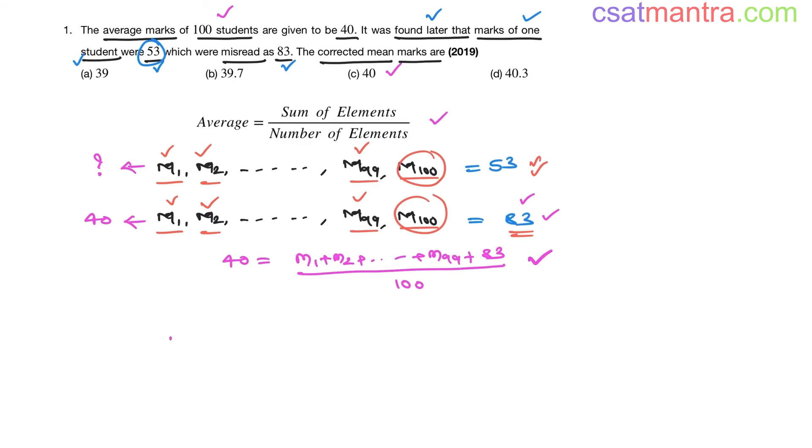Now, from this equation, we can write M1 plus M2 plus up to M99 plus 83 equals 100 times 40, which is 4000. Now, M1 plus M2 plus up to M99 equals 4000 minus 83. This is 3917.